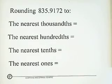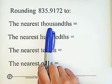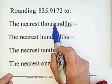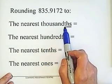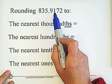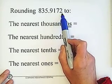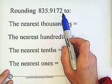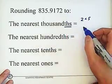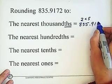For example, rounding 835.9172 to the nearest thousandths. When we see thousandths, it means on the right side of the decimal point: tenth, hundredth, thousandths — which is the digit 1. We check the right side of the rounding digit, which is 2. Because 2 is less than 5, we drop it. So the answer is 835.917.